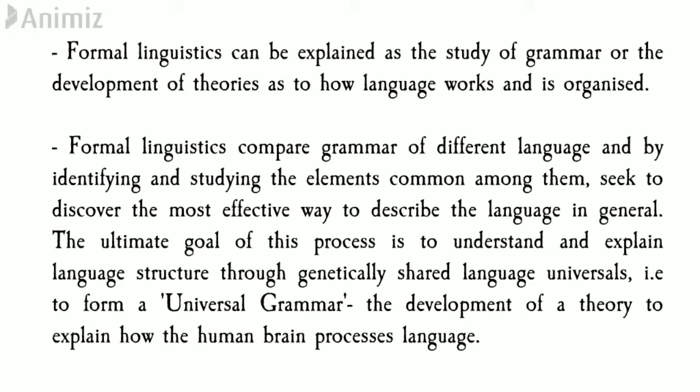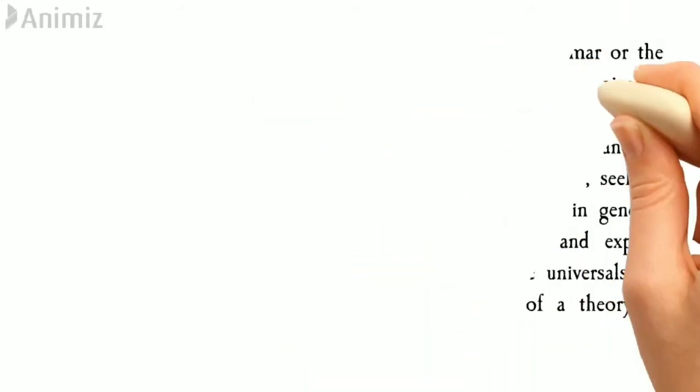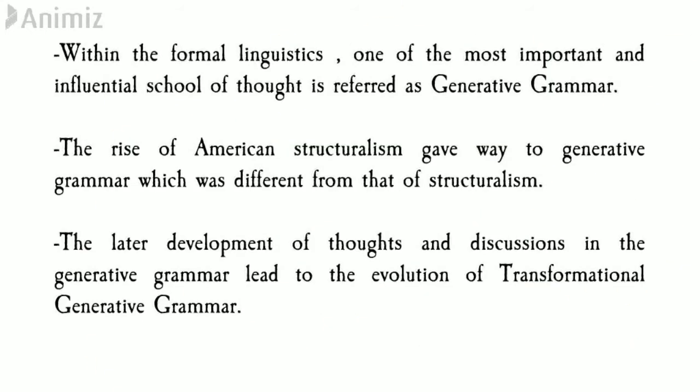Noam Chomsky believed in a universal grammar concept — the development of a theory to explain how the human brain processes language. Within formal linguistics, one of the most important and influential schools of thought is referred to as generative grammar. So generative grammar is a school of thought that lies within formal linguistics, which is why we first discussed formal linguistics.